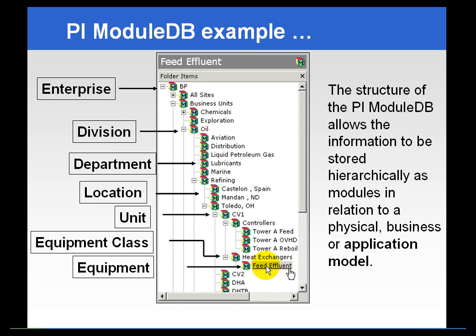While the user of whatever client tool you're using might not have that tag name memorized, they could understand what data they're going to get, or even find this heat exchanger, by drilling down through their business units, divisions, and locations down to a specific piece of equipment. That's an intuitive model that allows people to find information. In the next few segments, we'll see how to tie real-time information to this module database and how users might use this in the client tools to find data.